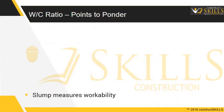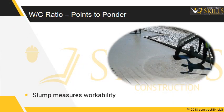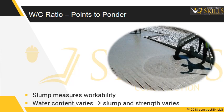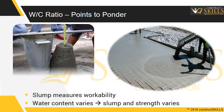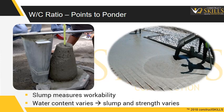Slump measures the workability of concrete, which is a measure of water content. As water content varies for a particular cement content, it affects both slump and strength of concrete. Our goal should be to ensure concrete is plastic enough to flow around reinforcement and reach all corners of formwork, while still achieving the required strength.